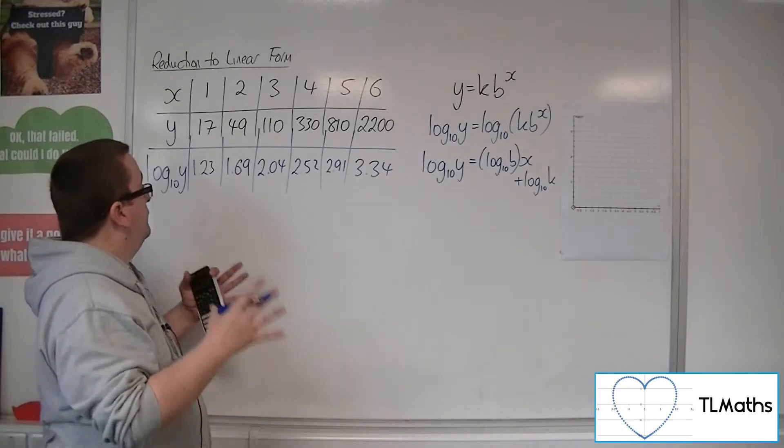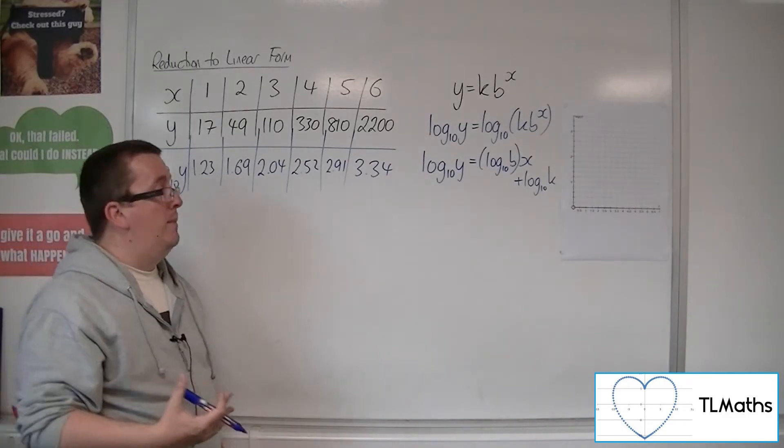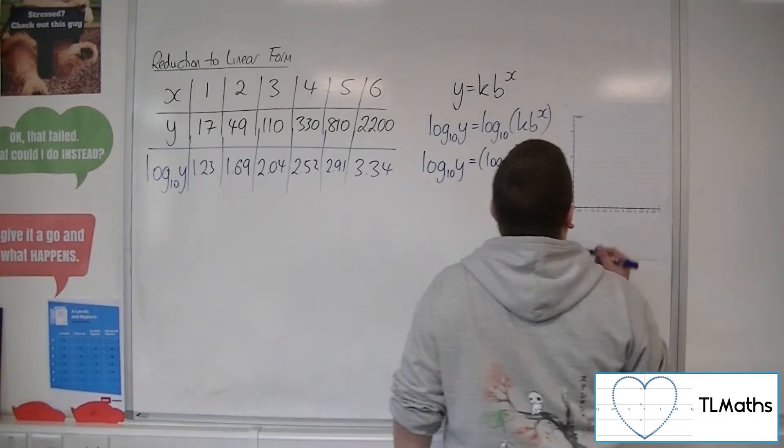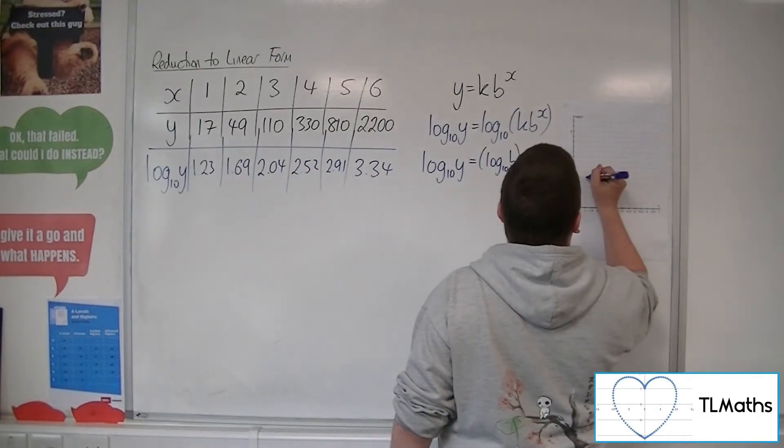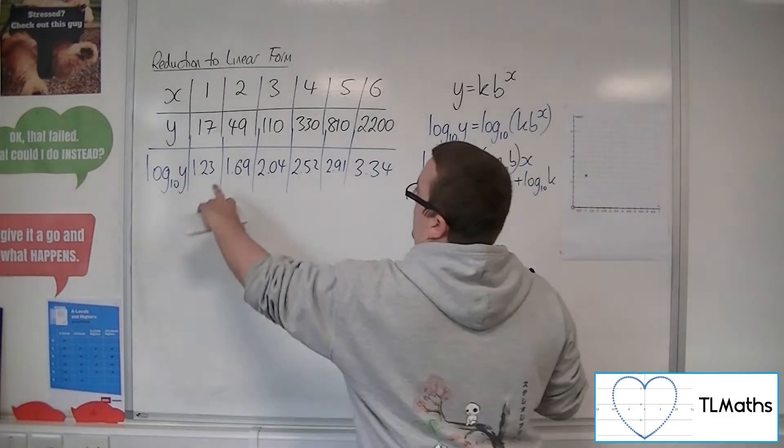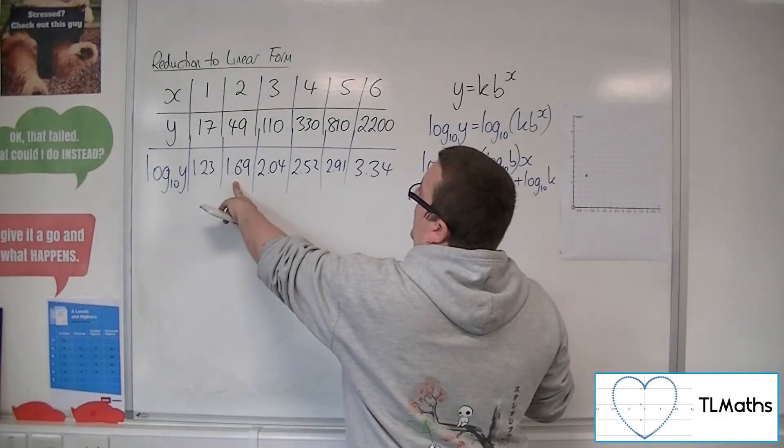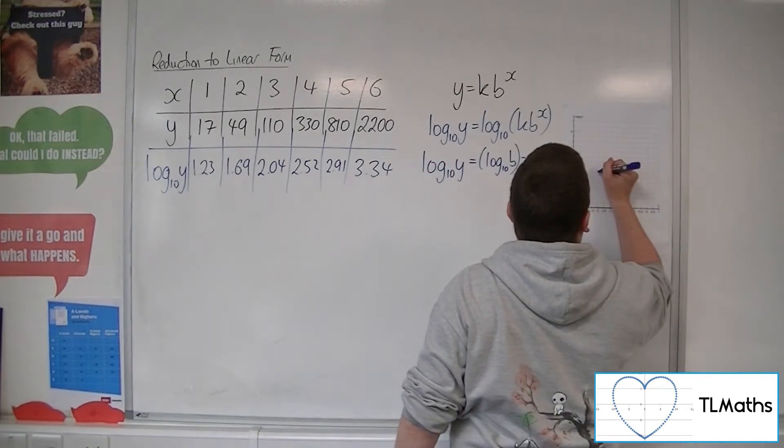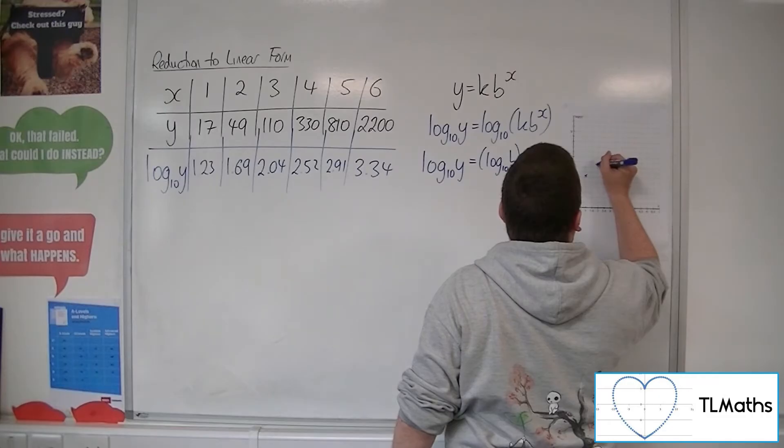So, having done that, I can now plot that information. So when x is 1, log 10y is 1.23. So 1.2 and a bit. When x is 2, we get 1.69. So 1.69 is something like that.